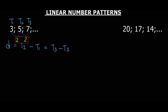So the constant difference is two. This means from term to term we add two. Seven plus two gives nine. Nine plus two gives eleven. Eleven plus two gives thirteen. So for a linear number pattern, moving from one term to another, you go one level up each time. This is a linear number pattern.